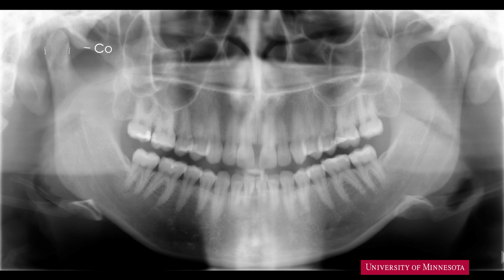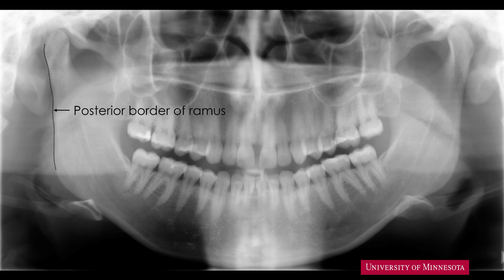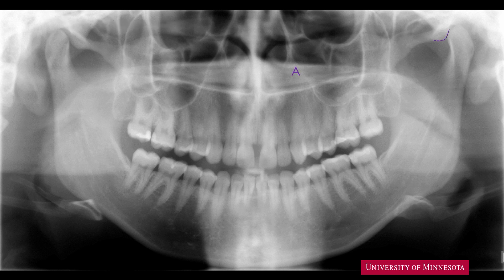On the superior part is the right condylar head. On many panoramic images, the superior border of the condyle may be obscured by other superimposing bony structures. After we identify the condylar head, we can see the posterior border of the right ramus. Superior to the condylar head, we can see the articular fossa. The bony protrusion is the articular eminence. On the mesial part of the condyle, we have a bony depression called the sigmoid notch.